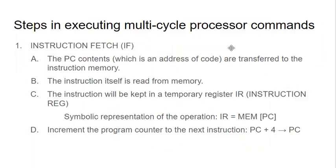Now let's talk about the first step in executing a multi-cycle processor command — what we do in the first cycle. We take the PC contents, which is an address in our code. The PC is the pointer telling us which line we're at. It reads the contents of memory at that address — say address 0x400050 — and transfers it to the instruction register.